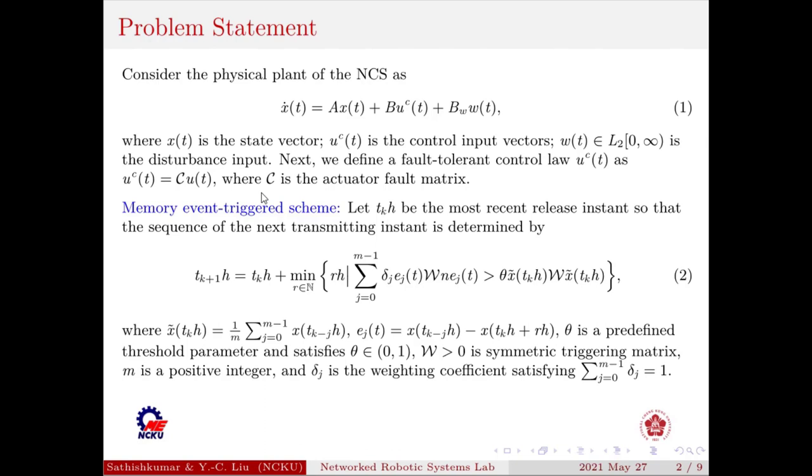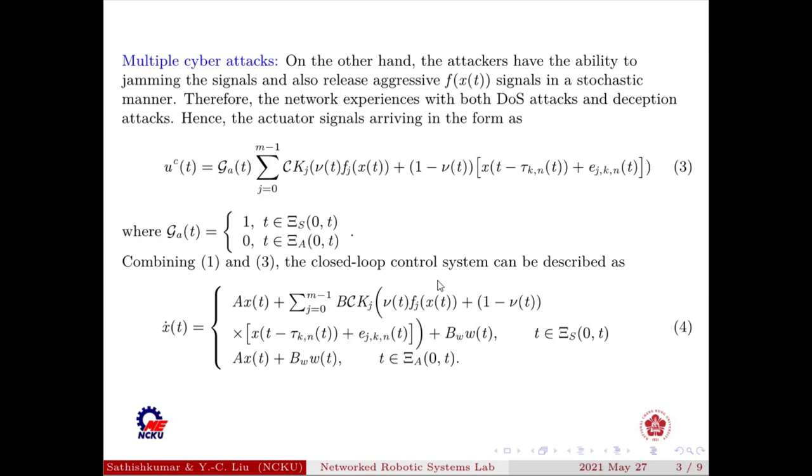The condition for the memory event trigger scheme is equation number two. And multiple cyber attacks. The attackers have the ability to jam the signals and also release aggressive signals in a stochastic manner. The actuator signals arrive in the form as equation number three, where gamma(t) equal to one, the sleeping period of the DOS jamming attack. Where gamma(t) equal to zero, the active period of the DOS jamming attack. Combining one and three, the closed loop control system can be described as equation number four. Next, we move on to the main results.